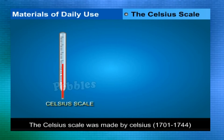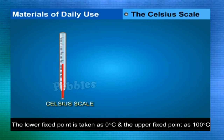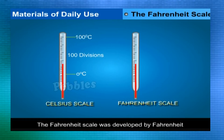The Celsius scale was devised by Celsius (1701–1744). Temperature is measured in degrees Celsius, with the lower fixed point at 0°C and the upper fixed point at 100°C. The normal temperature of the human body is nearly 37°C.